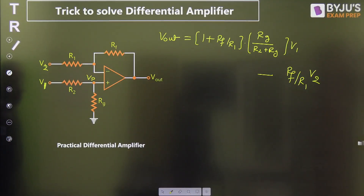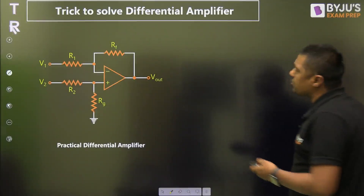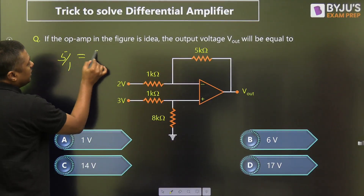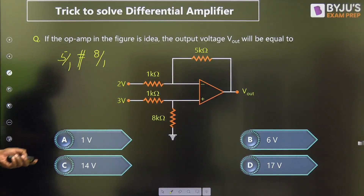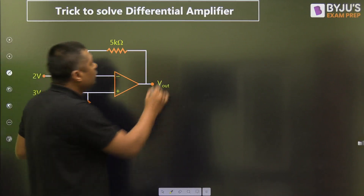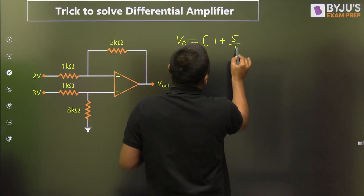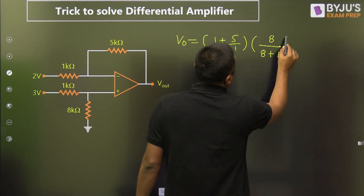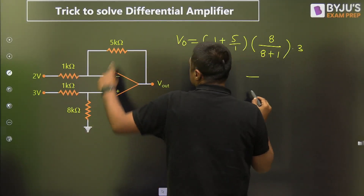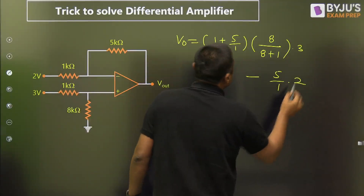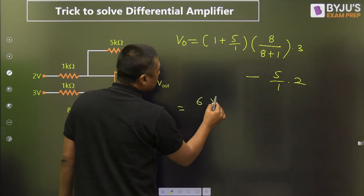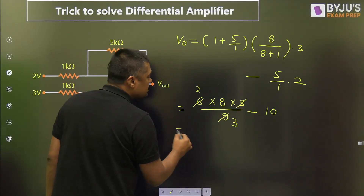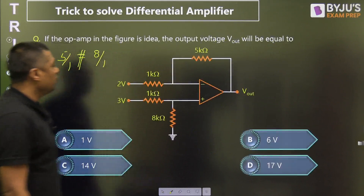Now you can solve any question on this diagram. Check the ratio: RF/R1 is 5/1, and RG/R is 8/1 — that condition is not matched. Since the condition is not matched, directly apply: V0 equals (1 + RF/R1) into RG/(RG + R2) into the non-inverting terminal voltage, minus RF/R1 into the inverting terminal voltage. This gives 6 × (8/9) × 3 minus 5 × 2, which equals 16 minus 10, and the answer is 6 volts.